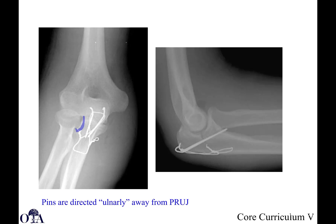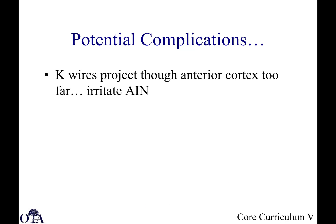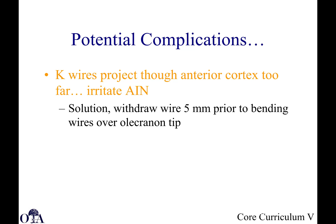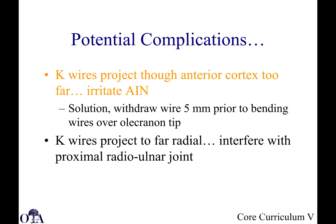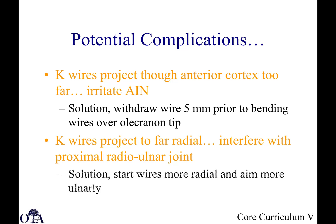Notice the pins are directed ulnarly, away from the proximal radial ulnar joint. You have to be careful — if pins are aimed too radially, they can block motion at the proximal radial ulnar joint. Always check pronation and supination and get a good AP view to confirm pin placement. If K-wires project too far anteriorly, they can irritate the anterior interosseous nerve. The solution is to withdraw the wire 5 millimeters prior to bending, then impact back in so they don't protrude too far. If you go too radial, start more radial and aim a little more ulnarly to correct.